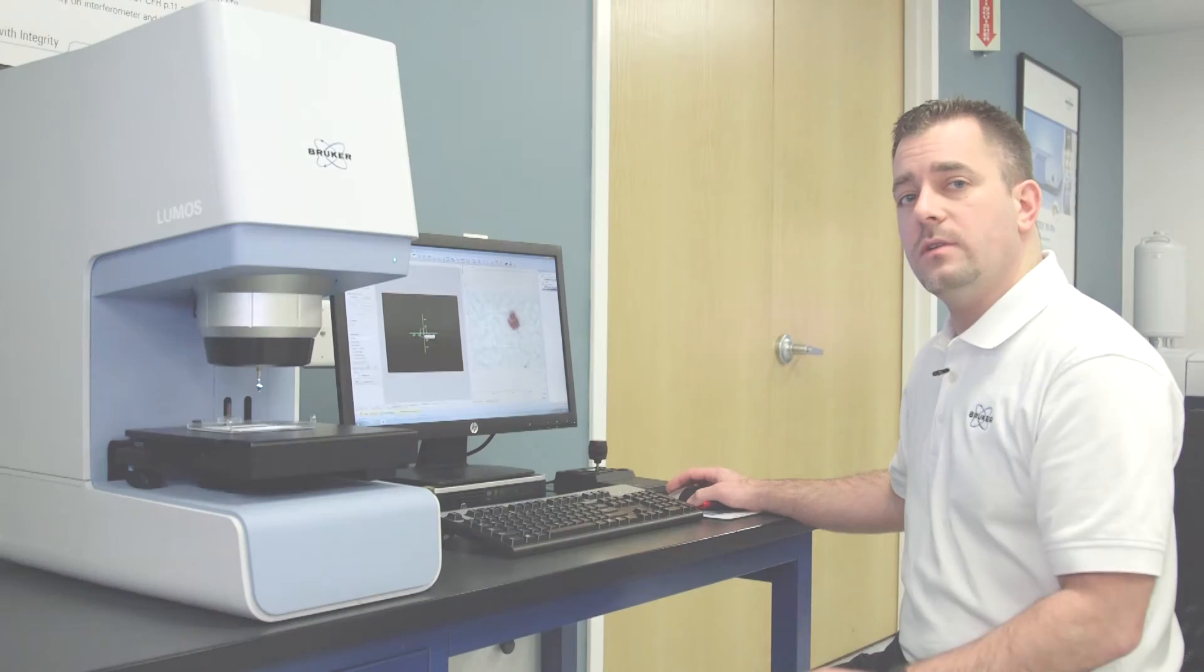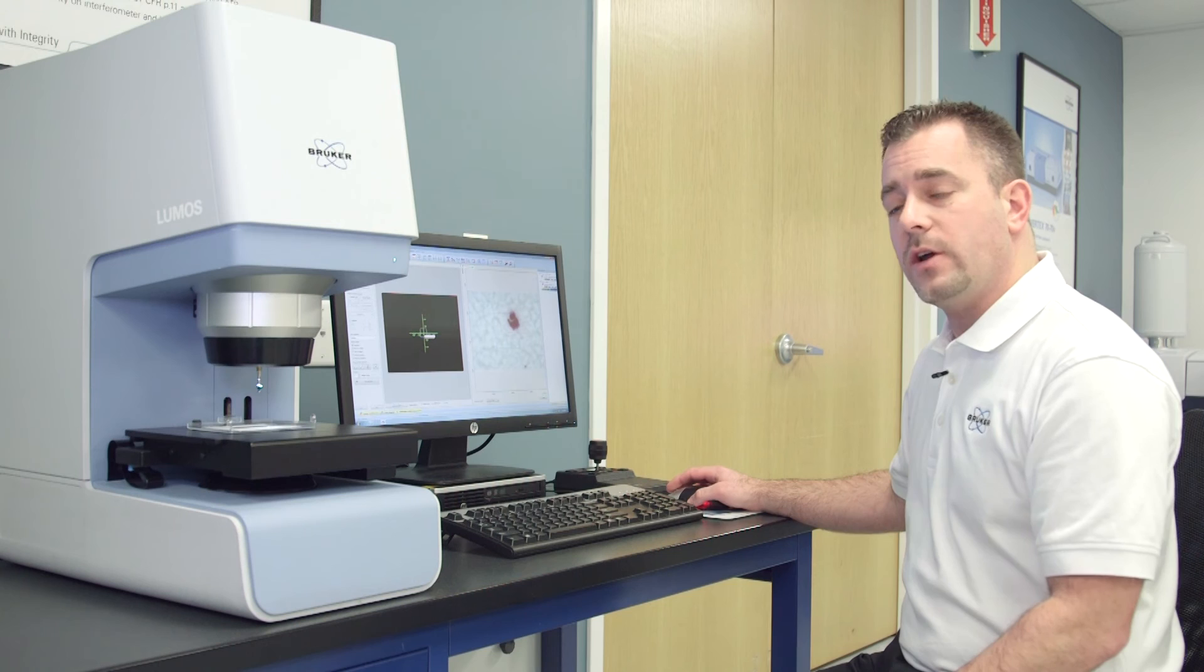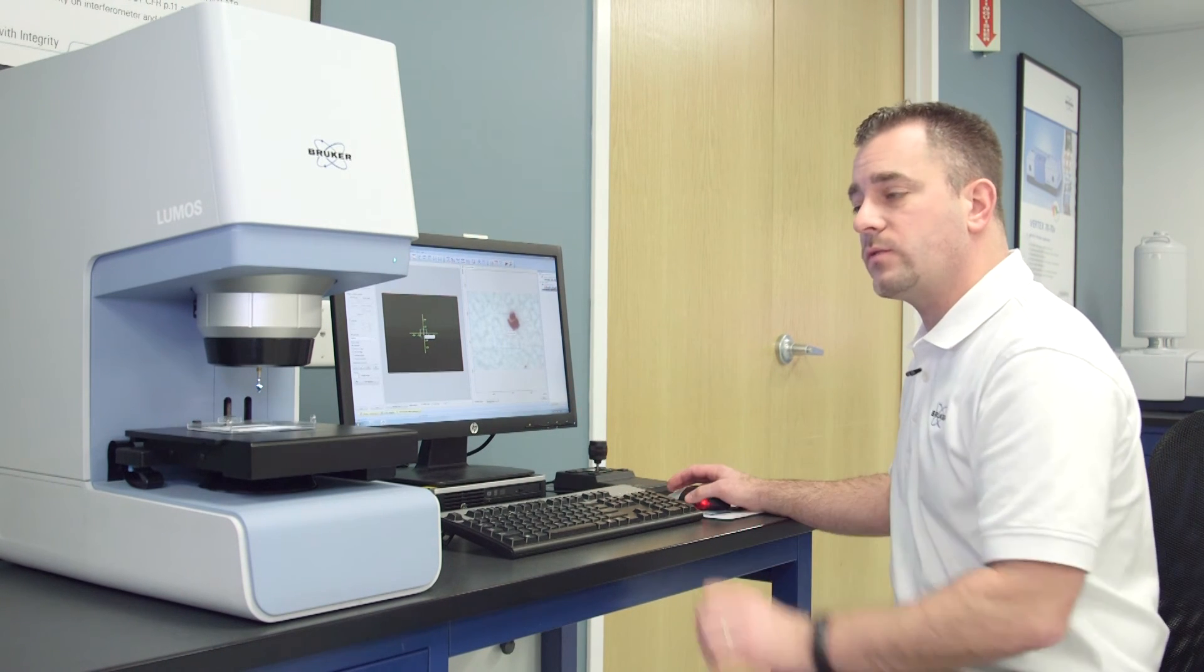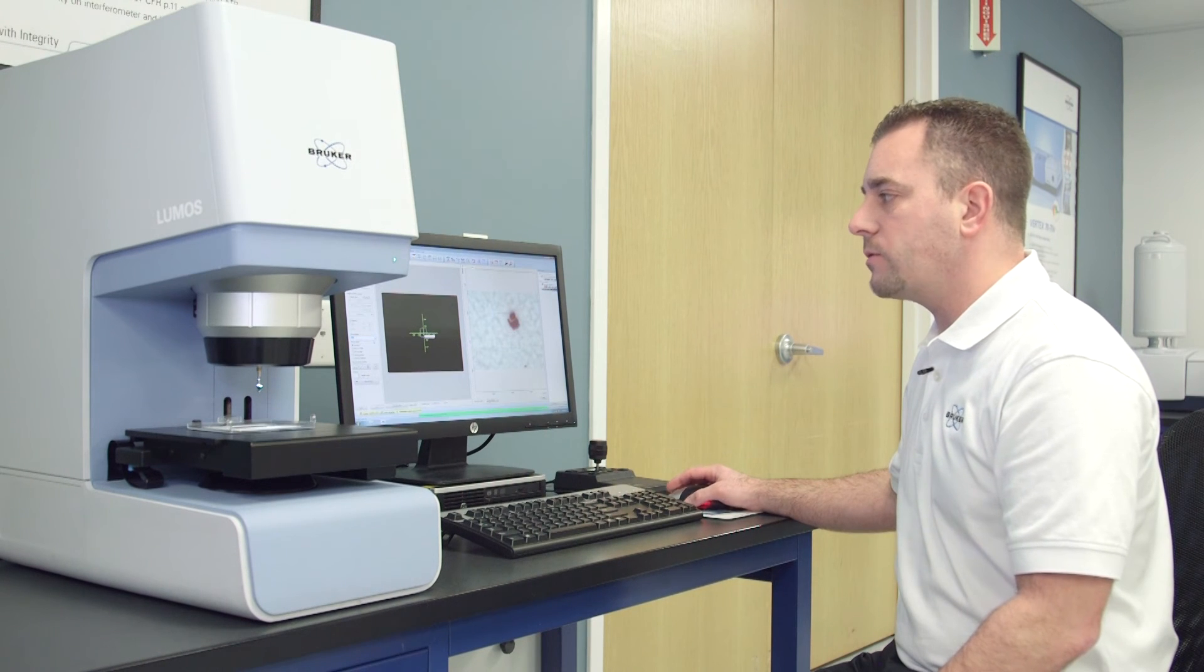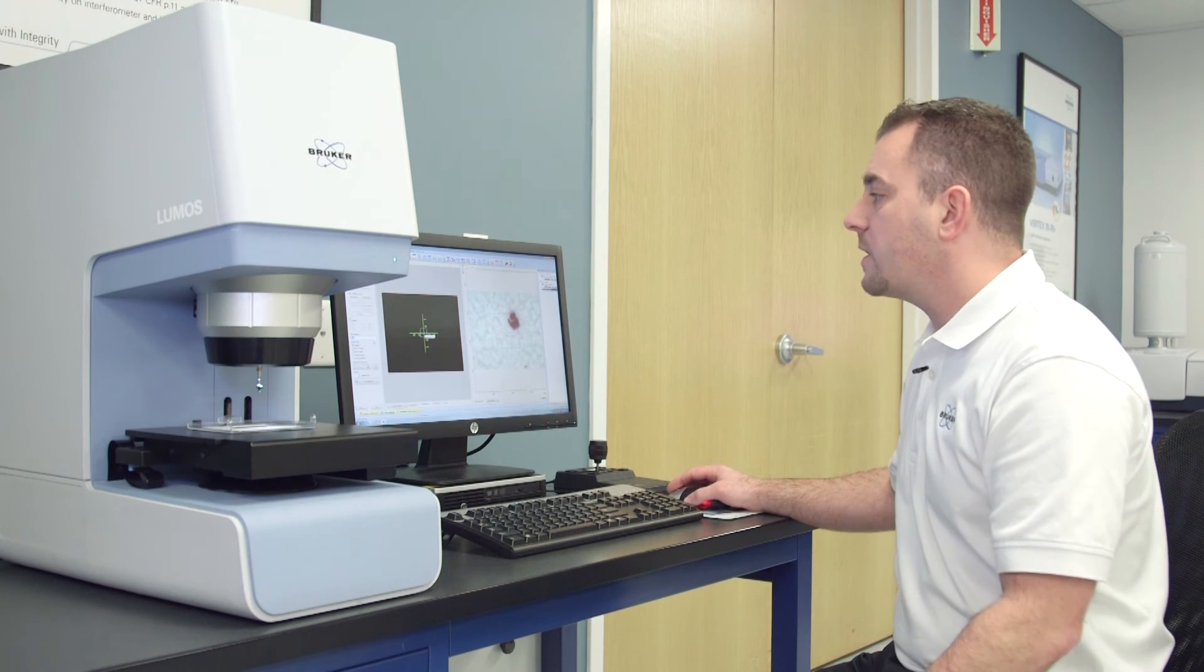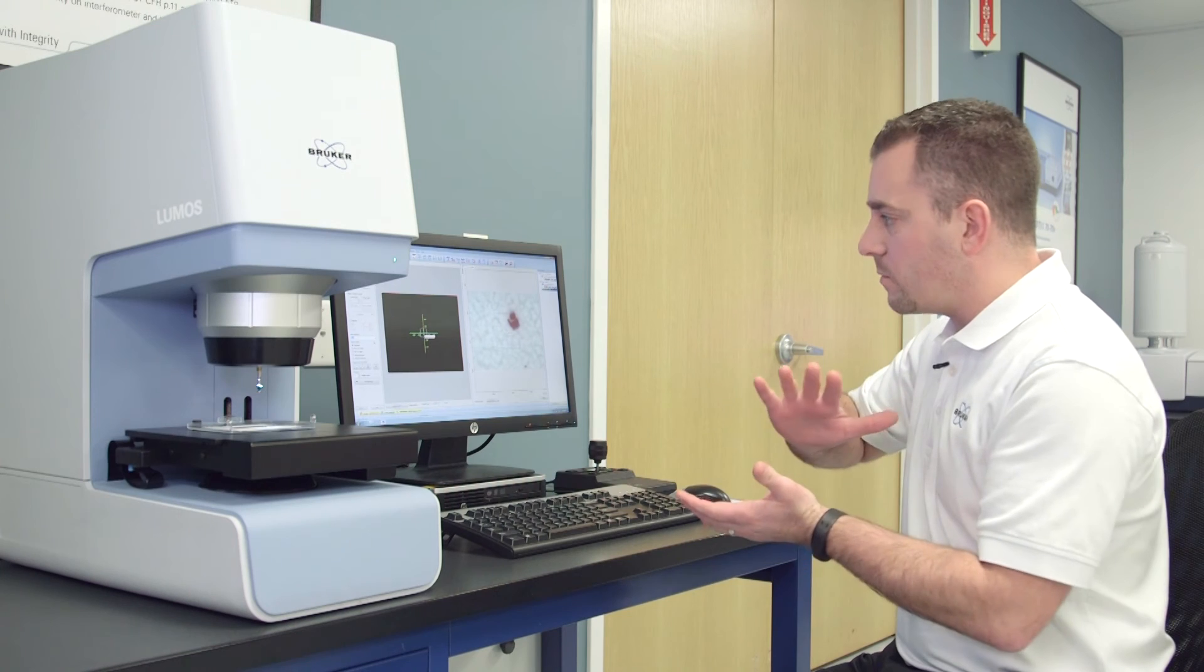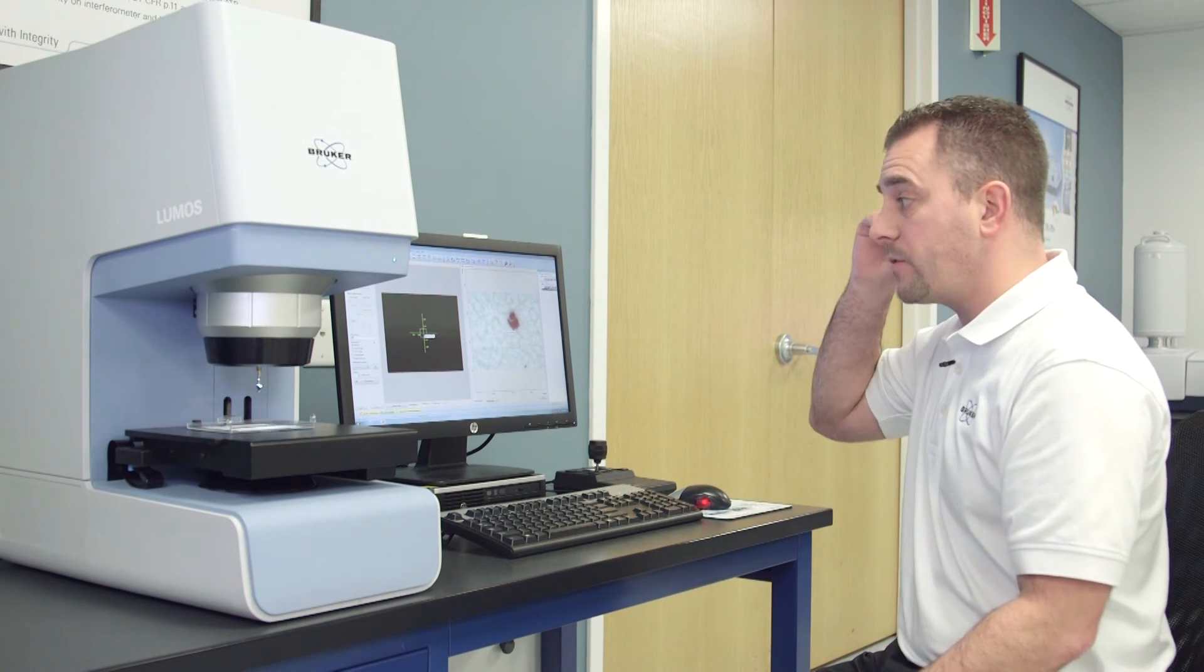Here I can choose the pressure settings I use from my ATR. Now my ATR objective itself in the post has three built-in pressure sensors: low, medium and high. I typically start with low just to protect my sample. If I need better contact or more pressure on the sample I'll choose medium or high afterwards.